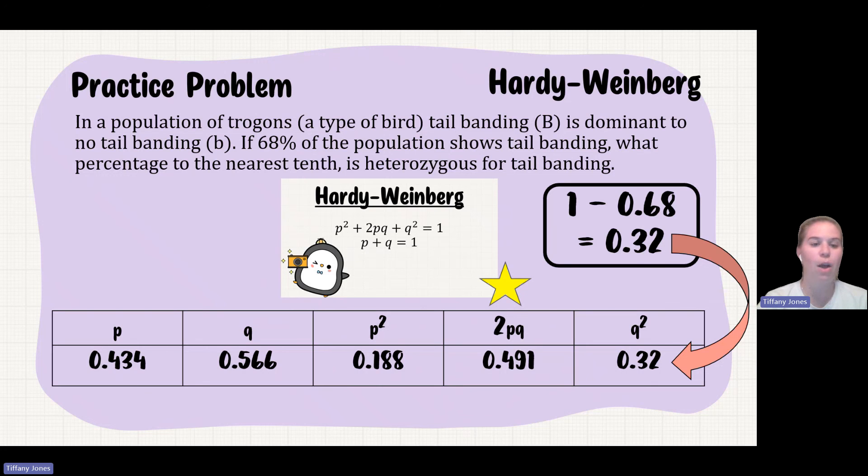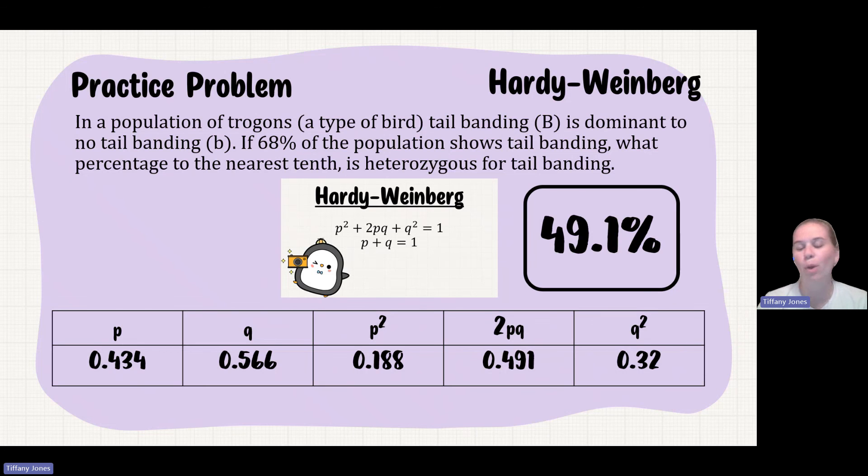And then it tells me that I need to figure out what is the percentage that are heterozygous. And that's going to be 49.1% because I multiplied this decimal times 100.